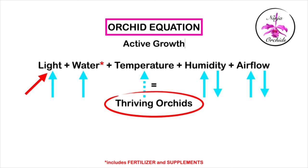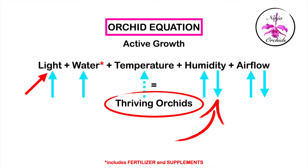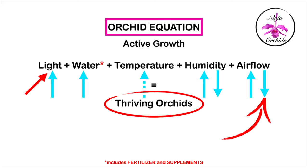If you're dealing with an orchid in active growth, higher light will require more water, sometimes temperature increases, so should humidity, which in turn requires an increase in airflow. You see how the changes of one variable affect the whole orchid equation. If you are in a very dry climate or are limited with how much humidity you can provide for your orchids, you will want to reduce the airflow, as that speeds up evaporation and dries media or mounts out even faster.